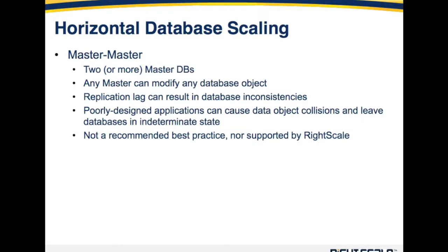No discussion of horizontal database scaling would be complete without a mention of master-master configuration. As the name implies, this is where you have two or more master databases, and any master can modify any database object. Replication lag can be a real problem here and can lead to database inconsistencies. With a poorly designed application where multiple app servers do rapid reads and writes, you can end up with data object collisions, leaving your databases in an indeterminate state where one master is correct and the other is not, but you don't know which is which. As such, it's not a recommended best practice, nor is it supported by RightScale, though some customers have had limited success in very specific use cases.